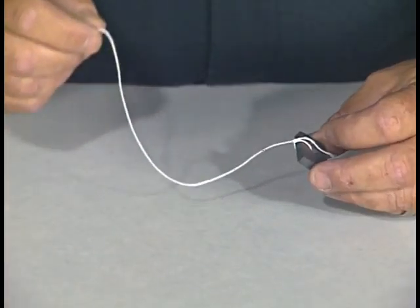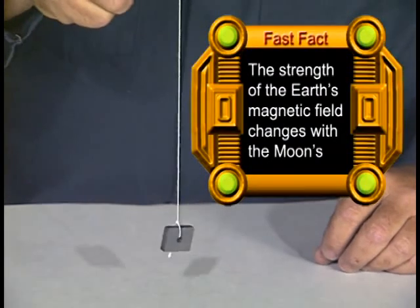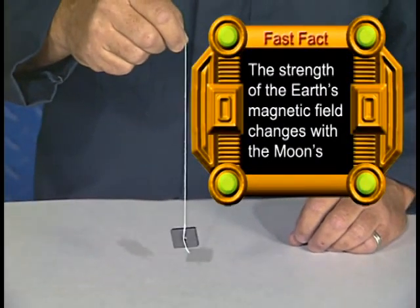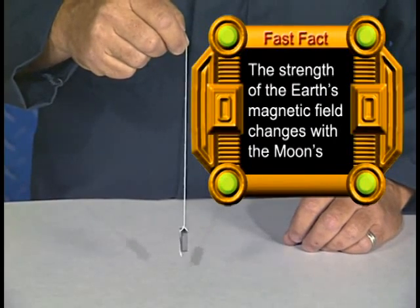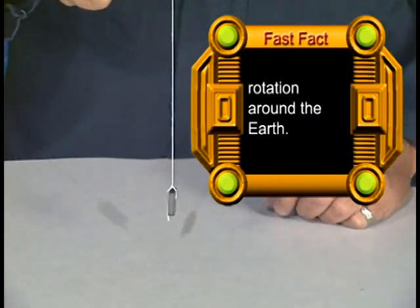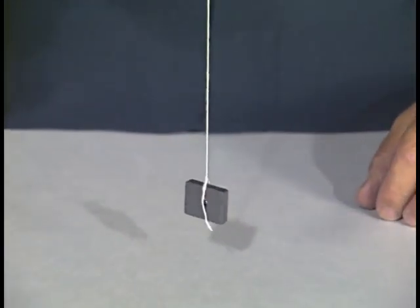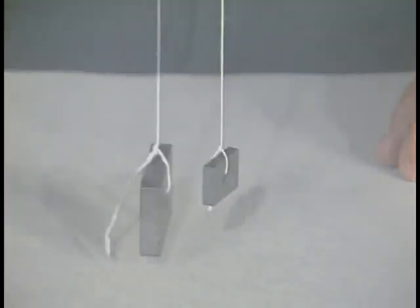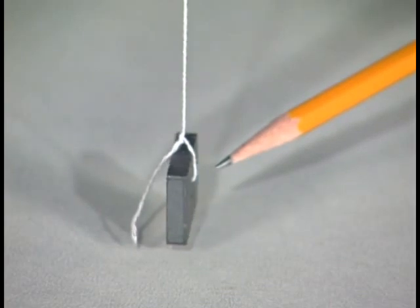To determine the north and south poles of the magnets, let's tie a string onto one of the magnets and suspend it. Due to the fact that the Earth is a giant magnet, the magnet will align itself with the Earth's magnetic field. Rotate the magnet and watch. It will always return to the same orientation. The side of the magnet that is facing north is considered to be the north pole of the magnet.